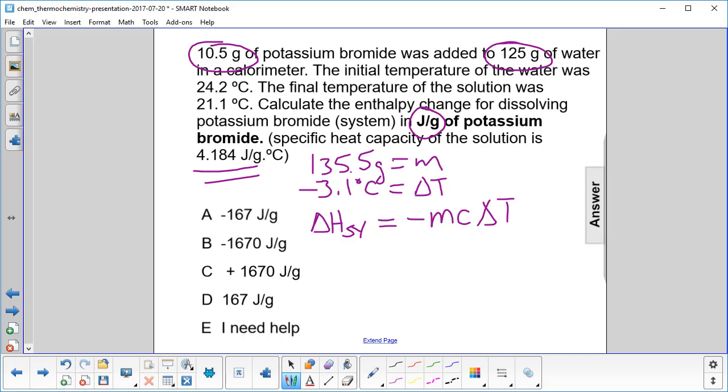Now we want it per gram. So what we're going to do here is divide by how many grams of potassium bromide we have. I put Br and there should be a K there for potassium. So that will be divide by 10.5 grams. Make sure you do that because then that will give us joules per gram.